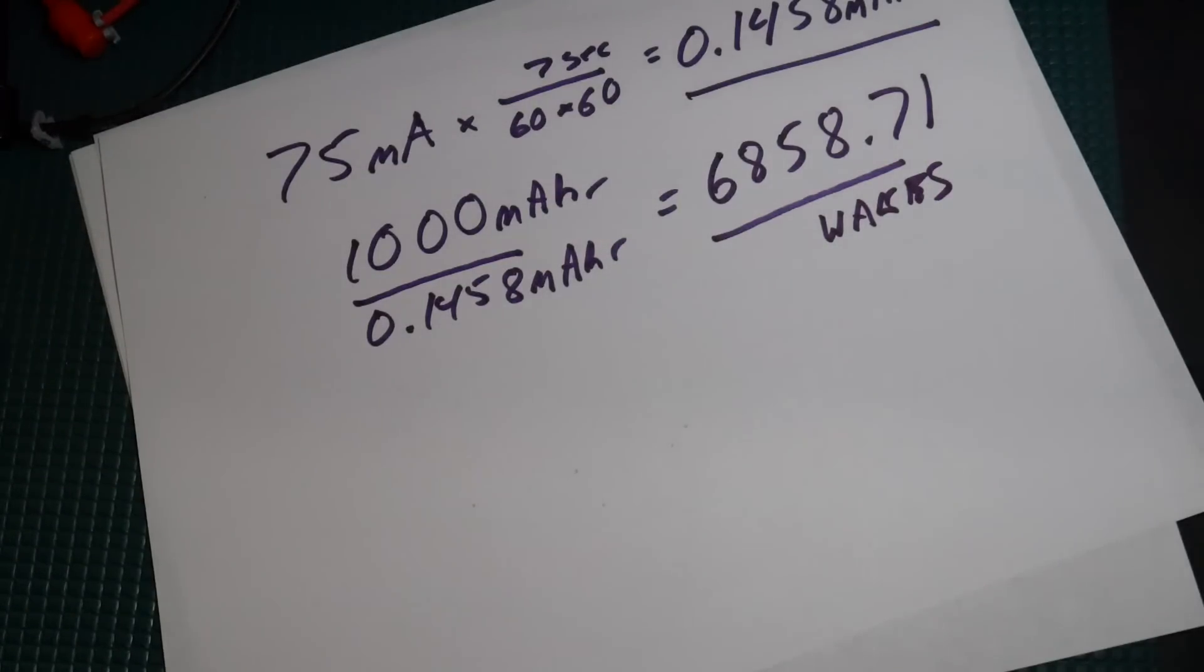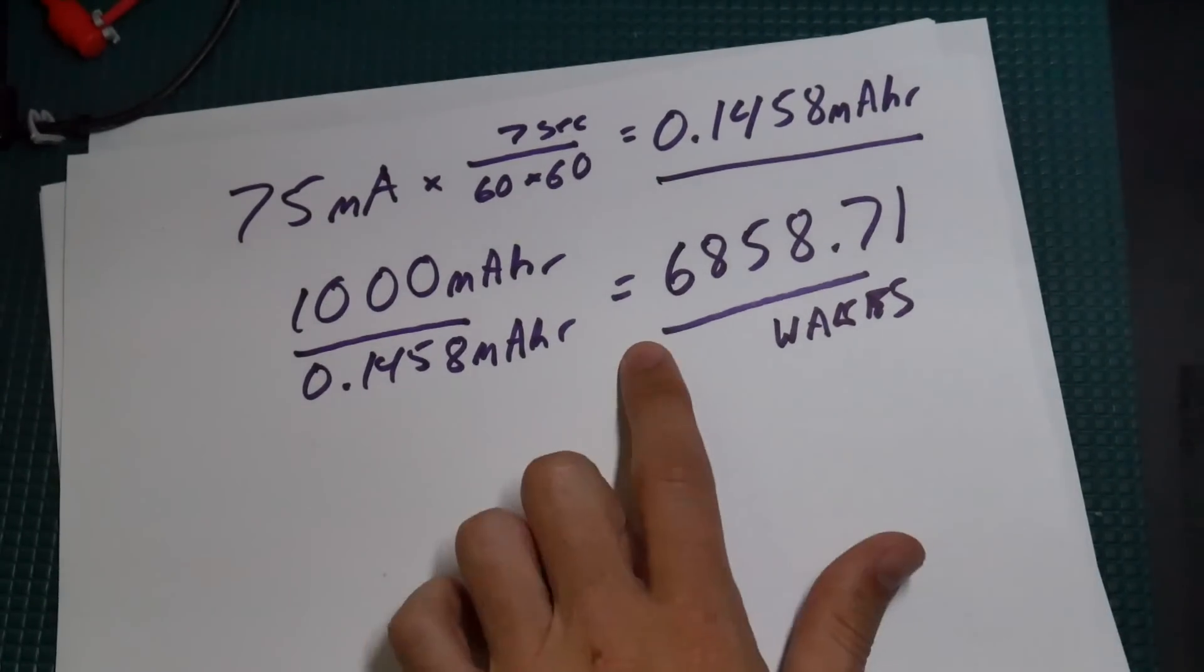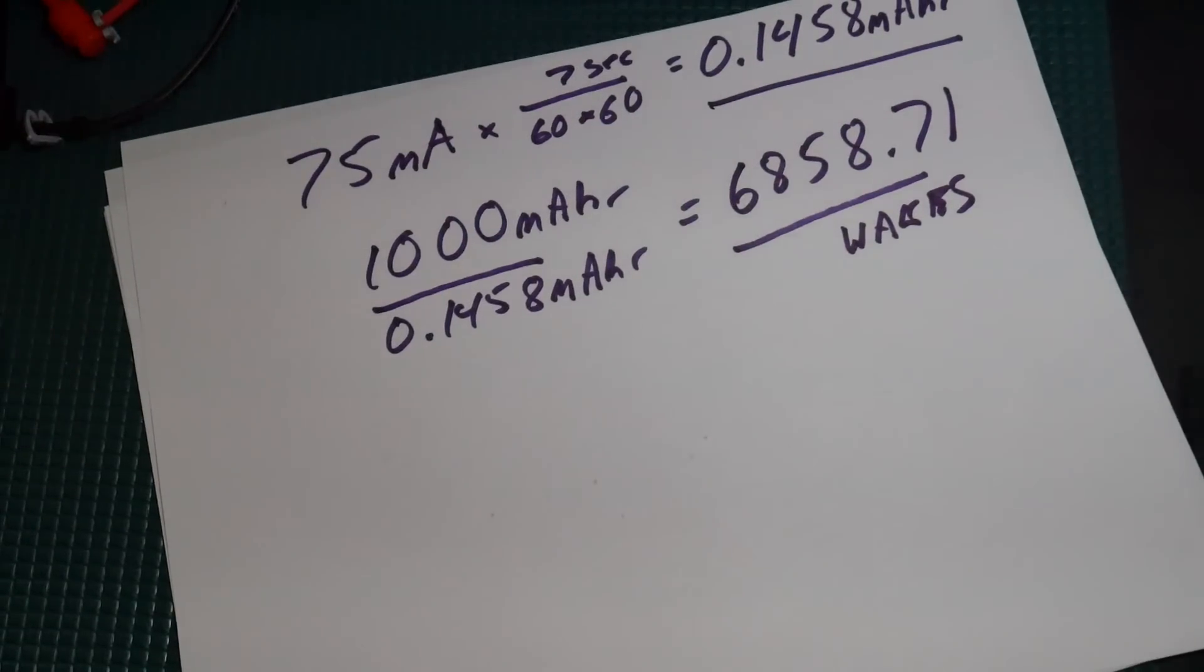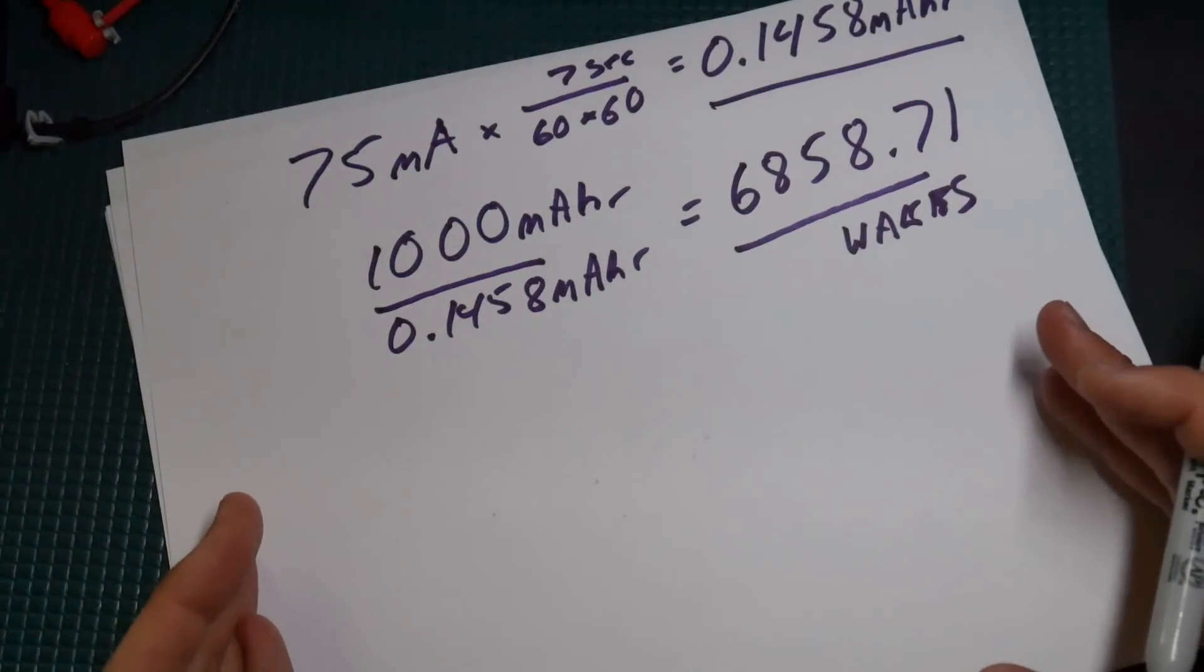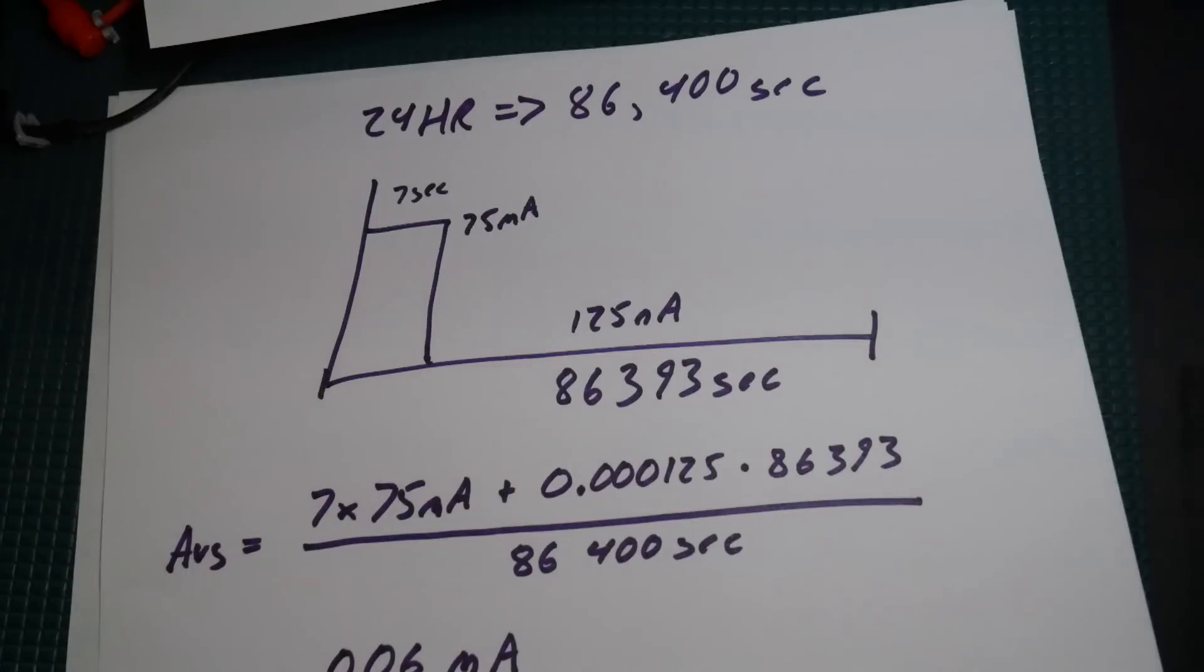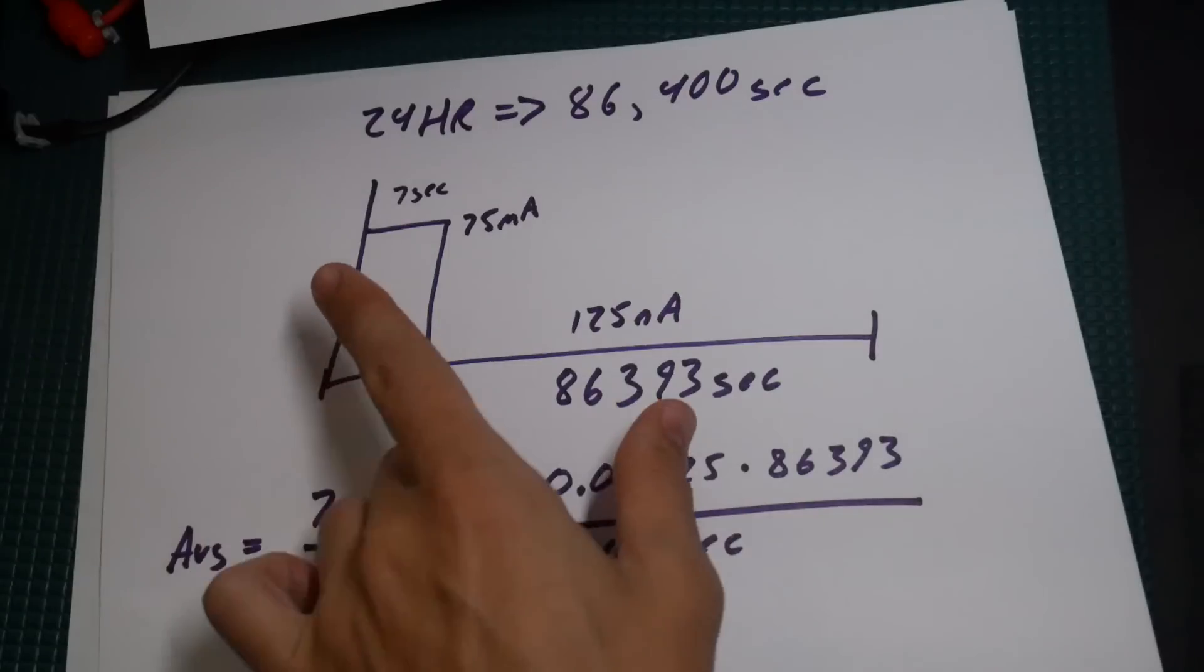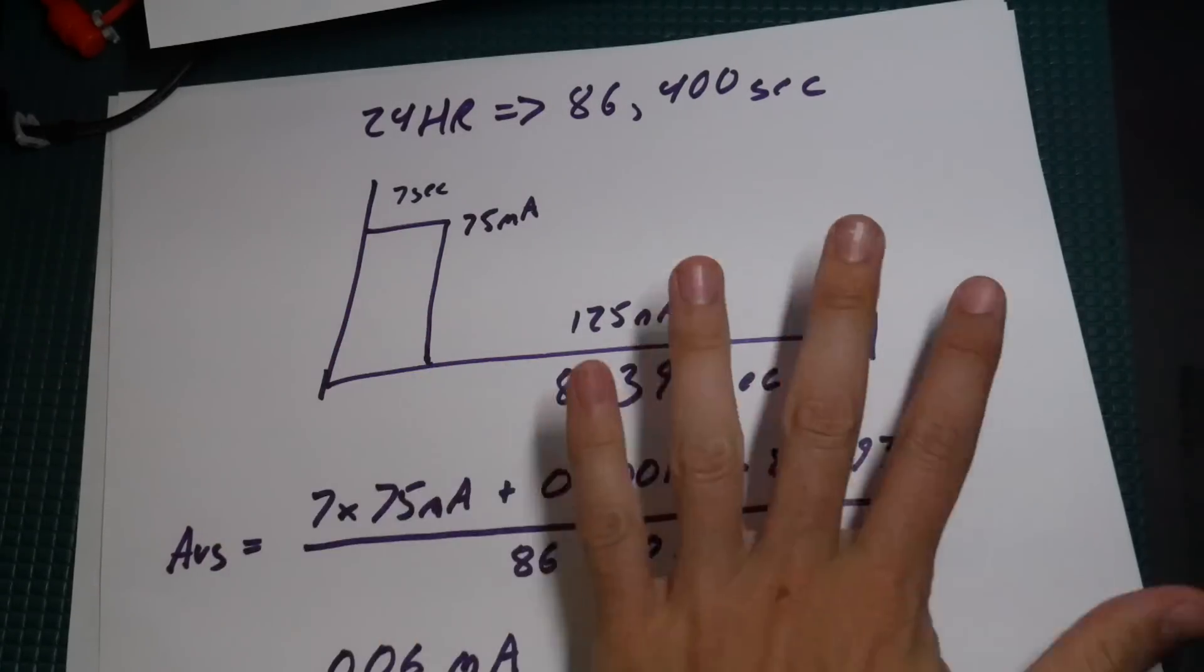When you're dealing with this sort of application where it could be sleeping all day long, like I've got a trig board in the mailbox that wakes up once a day, what I could do is take this 75 milliamps on for 7 seconds and it's off for the rest of the day. I could plug that in right here with the 1,000. That calculator isn't really going to work for this because it assumes you're going to wake up multiple times an hour not one time a day.